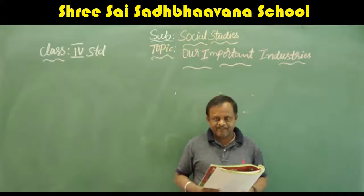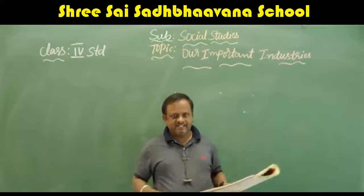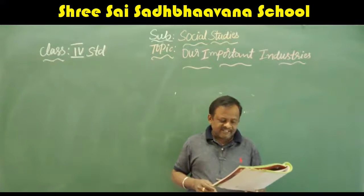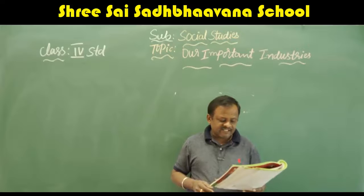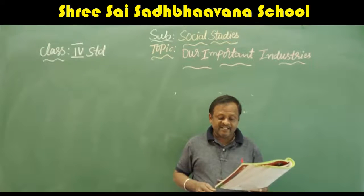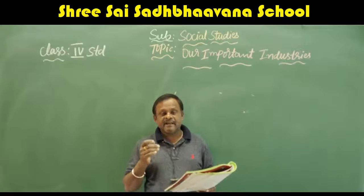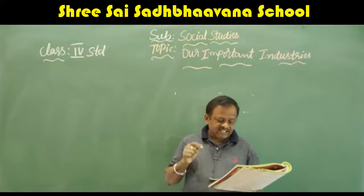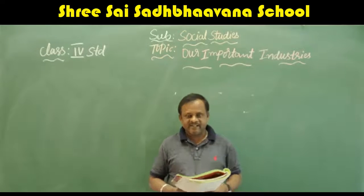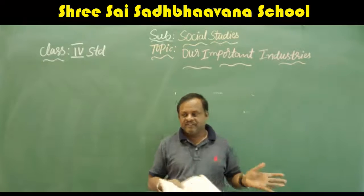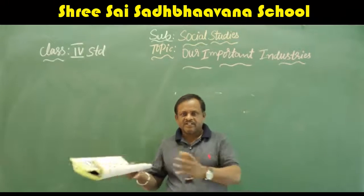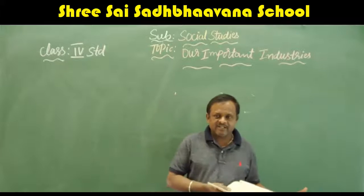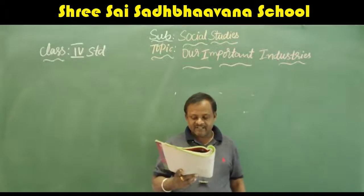Factors that decide the location of an industry: how do we decide where to start an industry? There are many factors. The first is finance or capital — without capital we cannot set up or run an industry. Next, industries are set up based on the availability of raw materials in an area. For example, if we grow more sugarcane, we start a sugar industry; if we have cotton, we start a cotton industry; if we have iron ore, we start an iron industry.